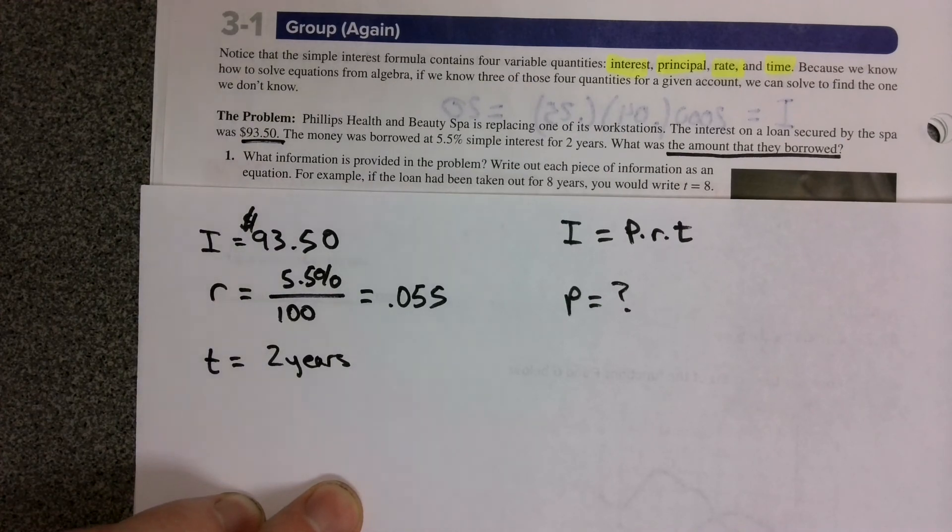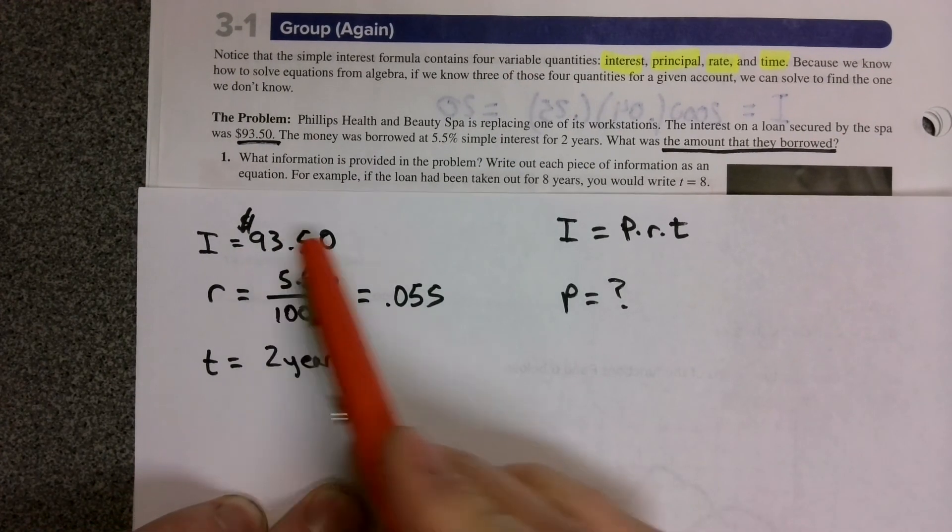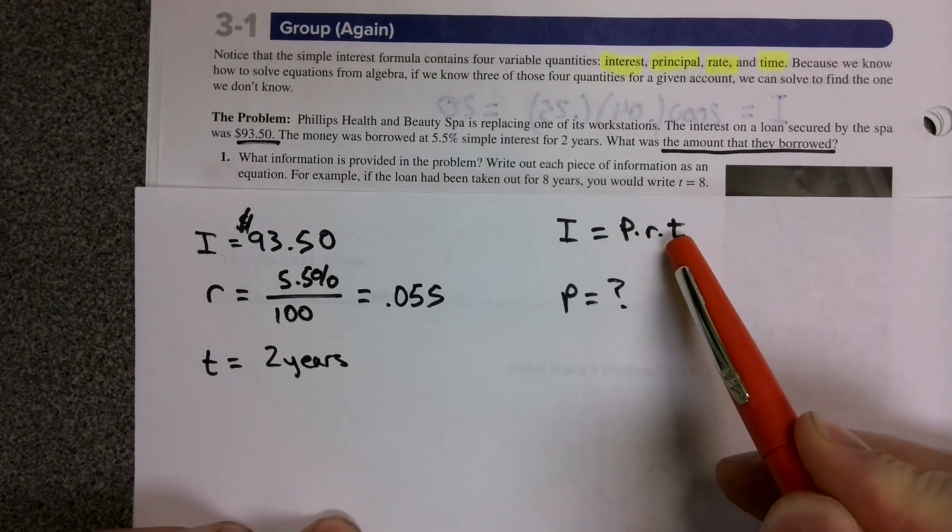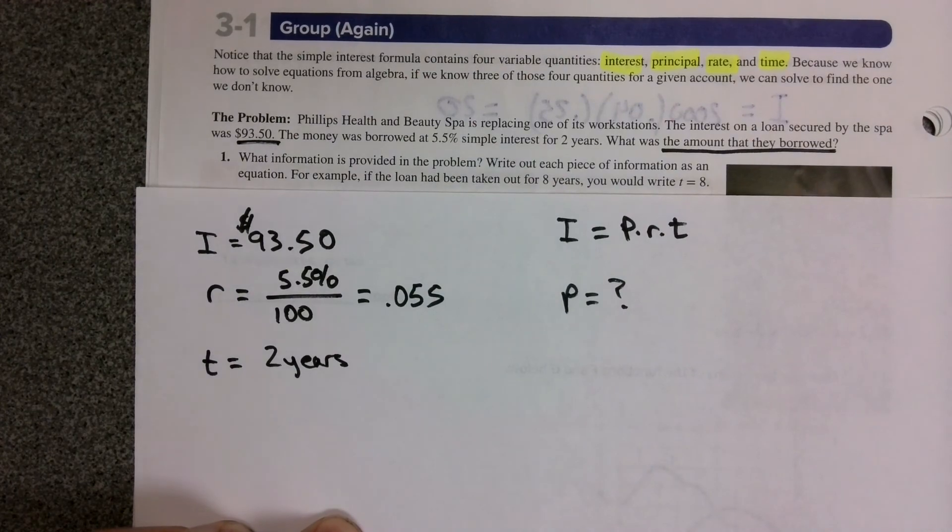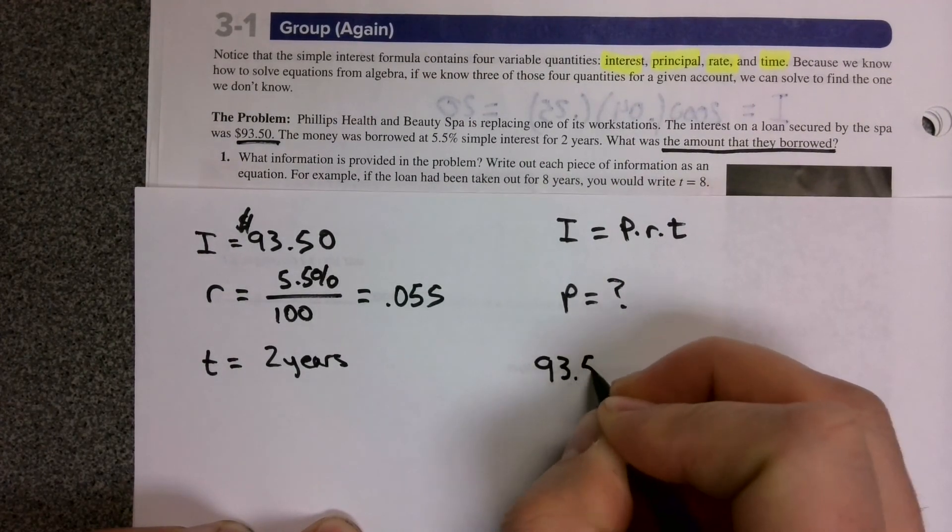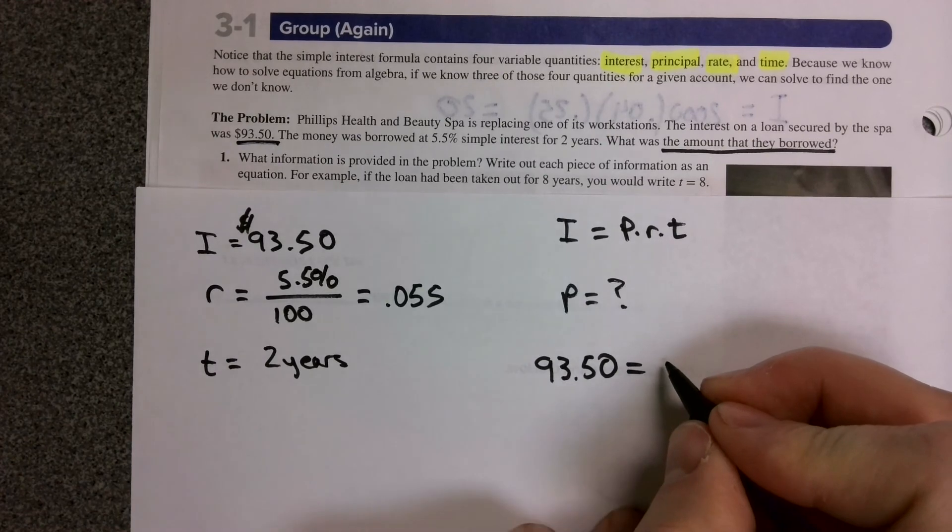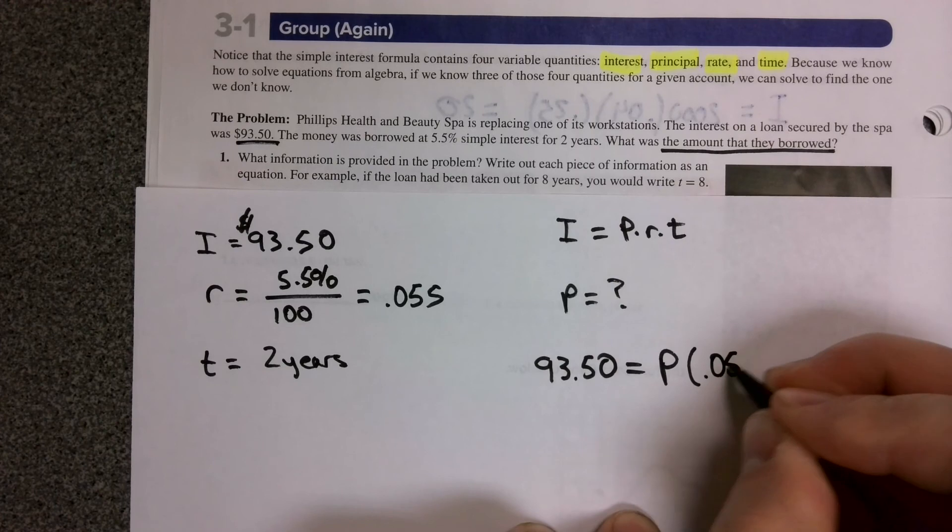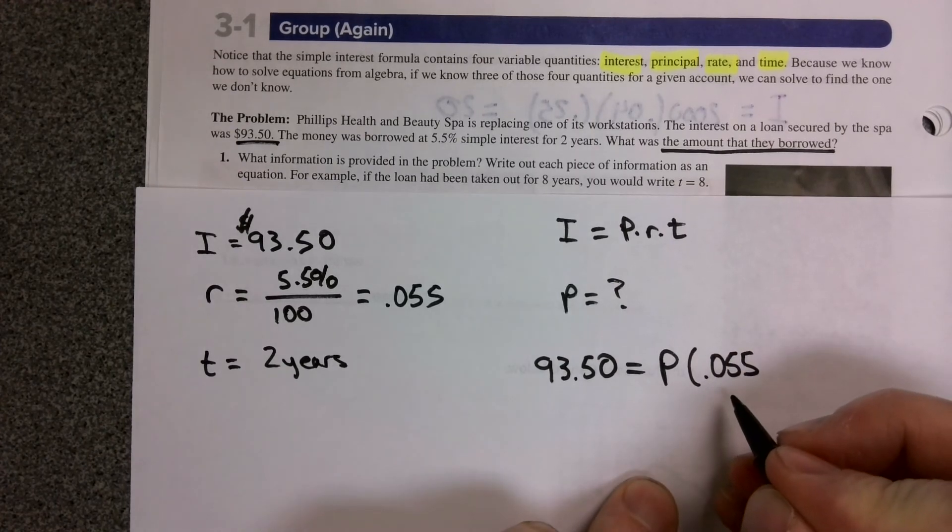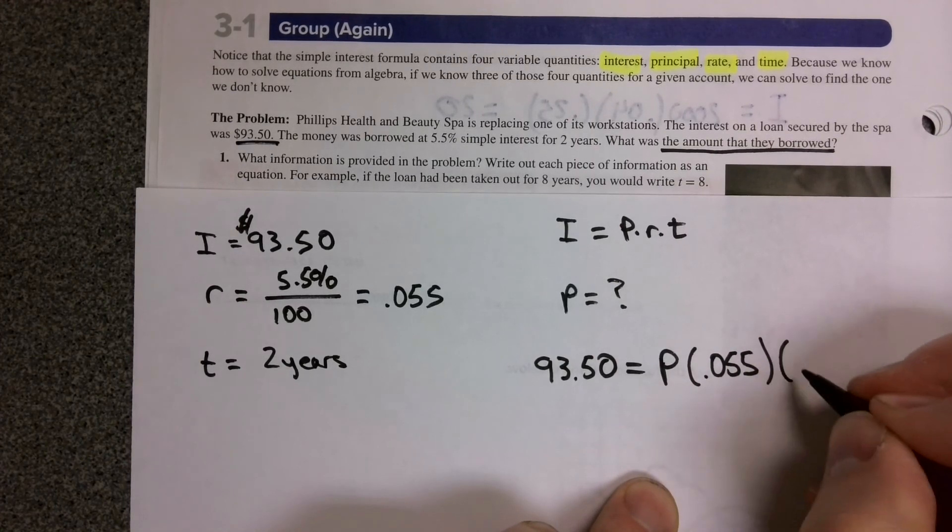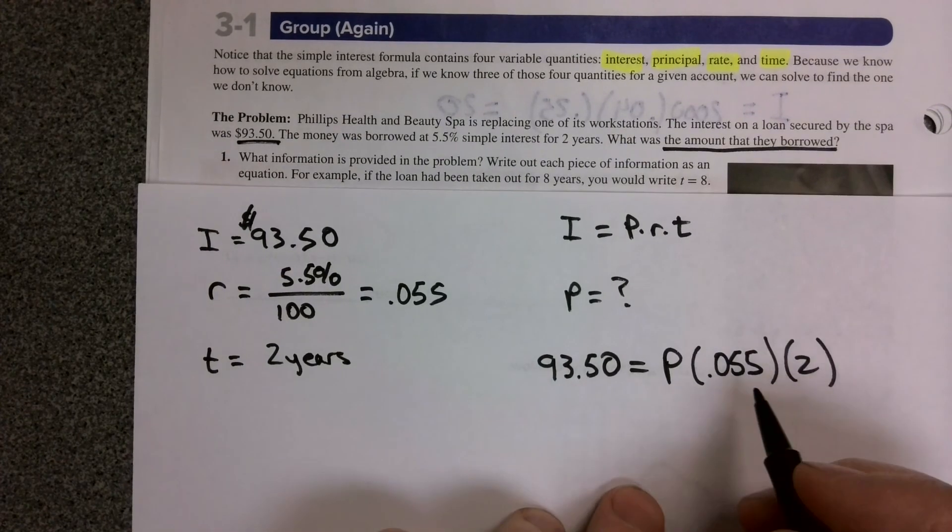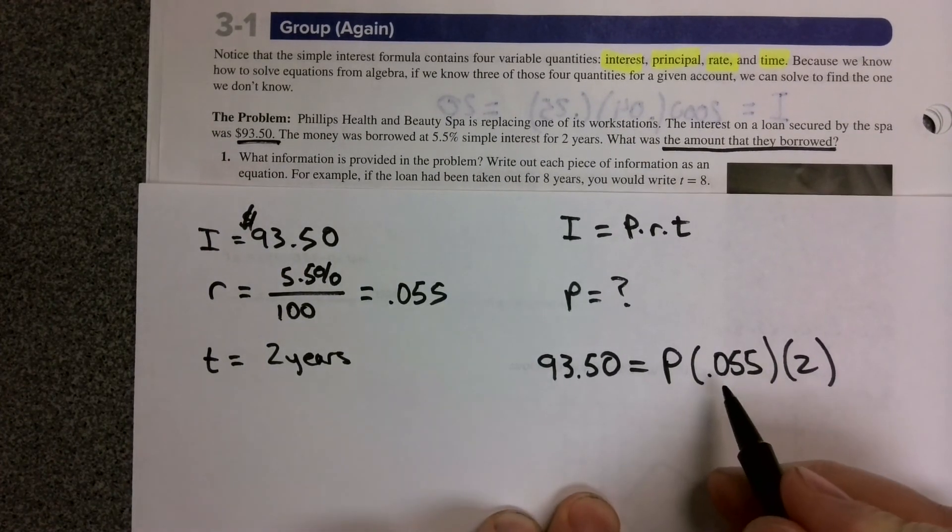If you look at the three things we've been given, we can simply substitute them into the different parts in our formula and do some algebra. We know that 93.50 equals some principle that we don't know times that 5.5% interest as a decimal, 0.055, times the two years that we borrowed the money for. So we can solve this doing algebra.